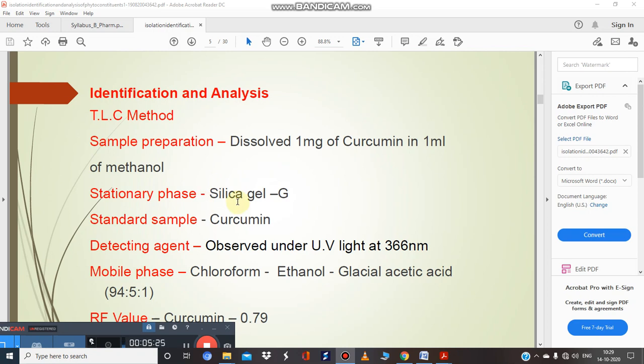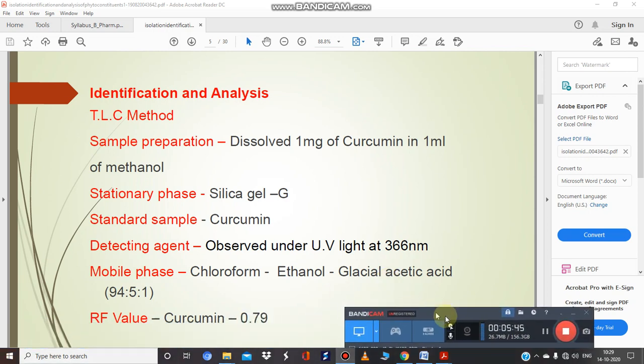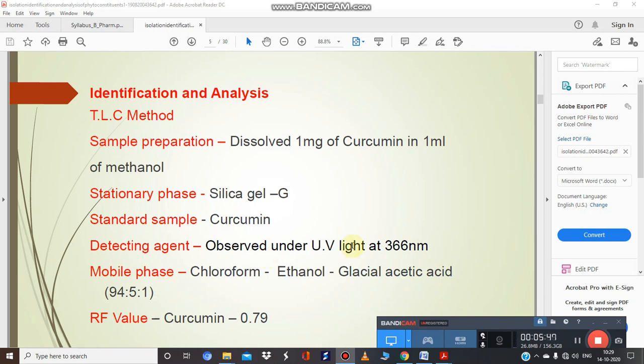The stationary phase is silica gel and the mobile phase is chloroform:ethanol:acetic acid in the ratio 94:5:1, meaning 94 ml chloroform, 5 ml ethanol, and 1 ml acetic acid. You observe under UV light at 366 nanometer, the long UV, and curcumin shows Rf value of 0.79.